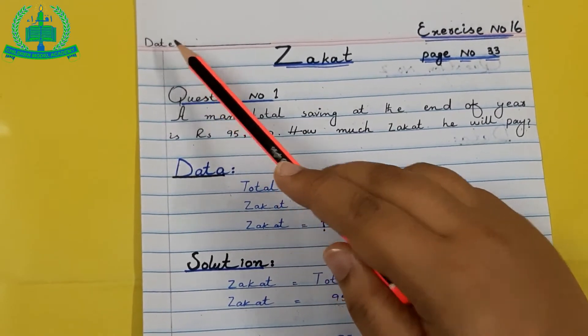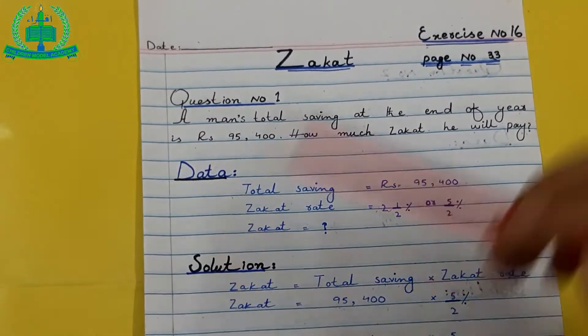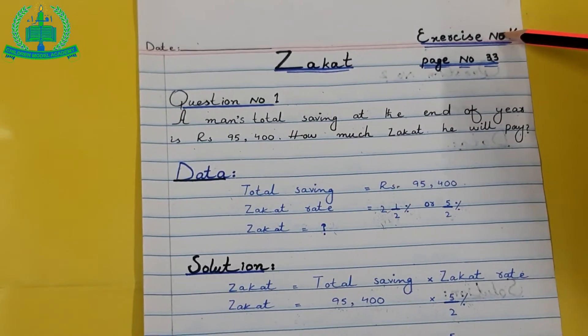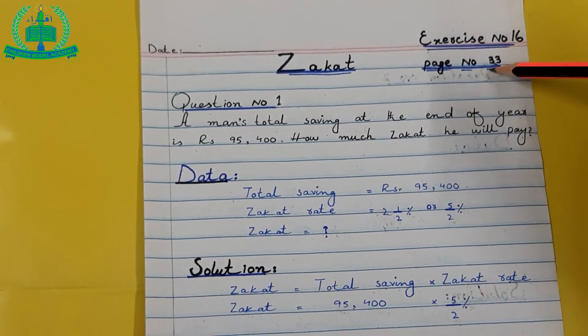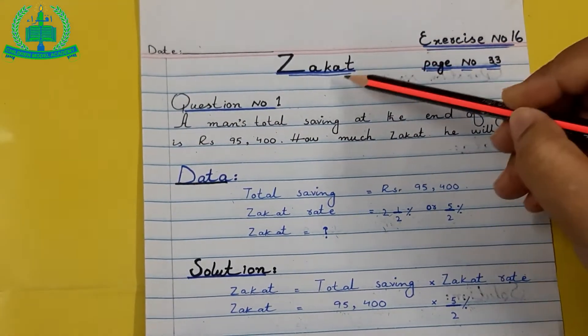Mention the date, draw a margin line. Exercise 16, page number 33 — Zakat.